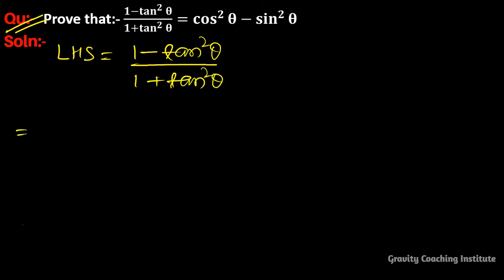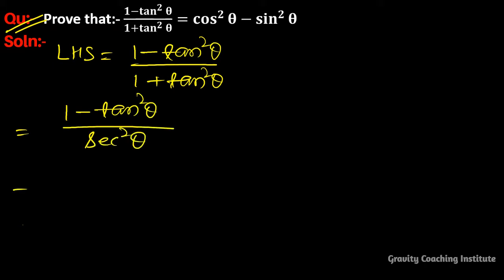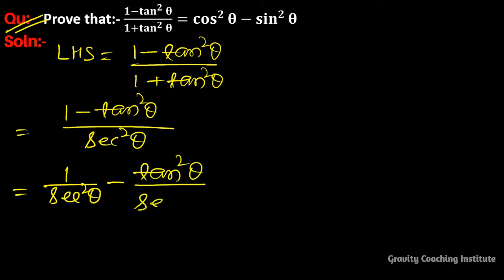We know that the formula 1 + tan²θ = sec²θ. Now split the fractions: 1/sec²θ minus tan²θ/sec²θ.